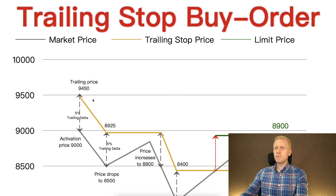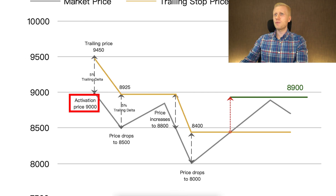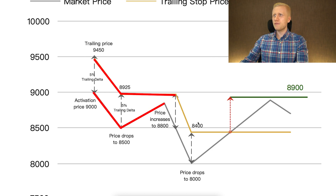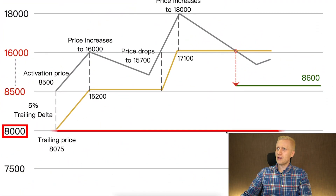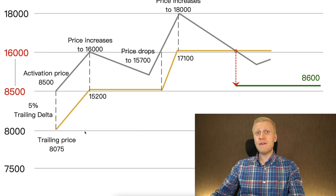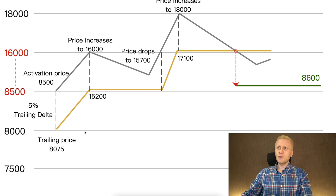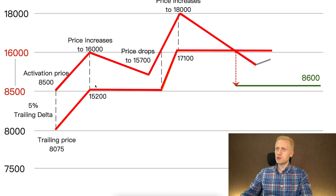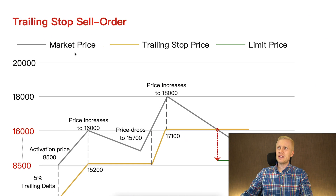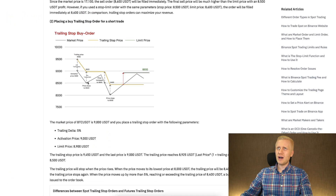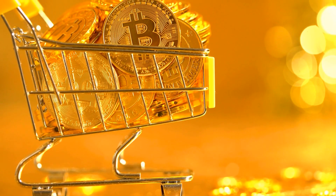The same applies for a trailing stop buy order. If you set the activation price at $9,000, the trailing price follows as the price drops. This is the key difference compared to a normal stop loss order. If I set a normal stop loss at $8,000, it stays on that specific line forever unless I close and change it. Meanwhile, the trailing stop loss order follows the price as it goes higher — for the sell order — or lower — for the buy order.